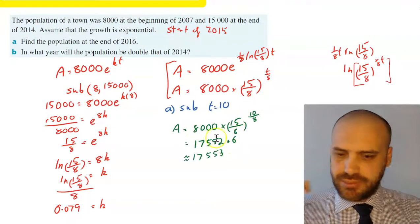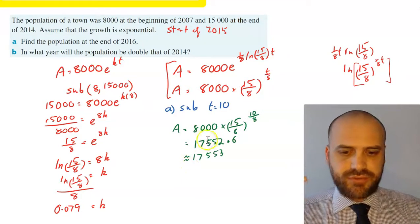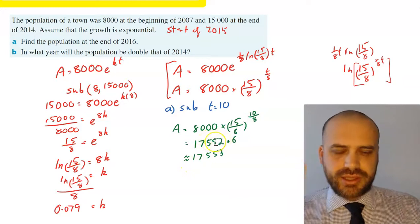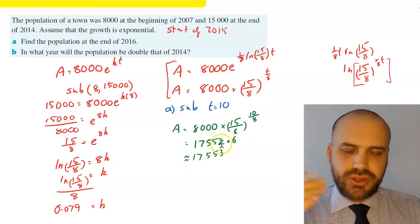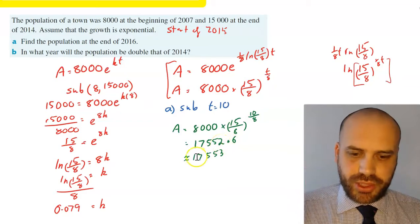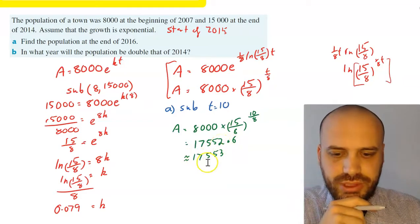So doing that, we just sub it in, calculator, 17,552.6. Now this is a population, we don't do a decimal here, you just round up or down appropriately. So 17,553 is my answer.